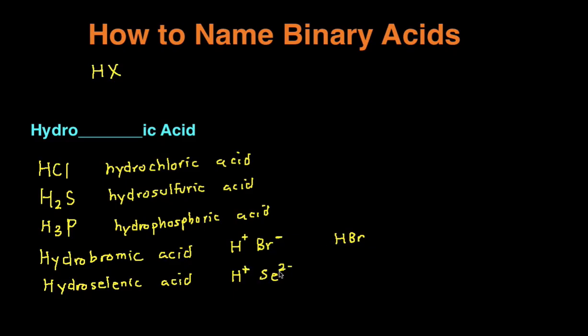And we check, we see that the charges don't cancel out. So then we can crisscross, giving us H2S. And the reason why we do this is because we want the compound to be overall neutral.